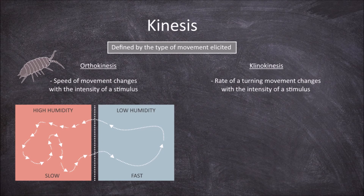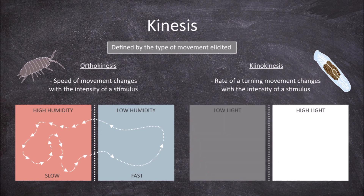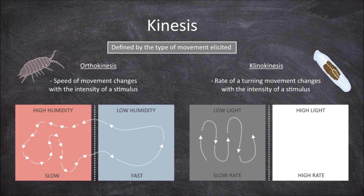An example of clinokinesis is observed in the flatworm Dendrocyllum lactium, in relation to the intensity of a light stimulus. The flatworm has an increased rate of turning with increased intensity of light. The reduced rate of turning in lower intensities helps keep it in the ideal lower light areas. Staying in the light can dry out a flatworm and potentially kill it. Increasing movement when light intensities are increased helps move it out of this light source.